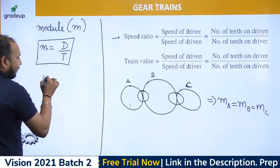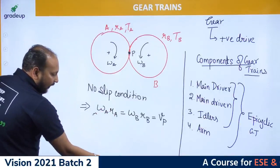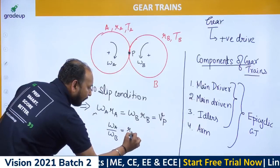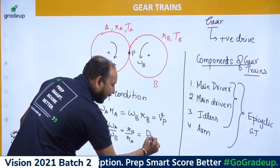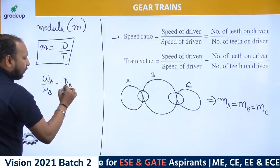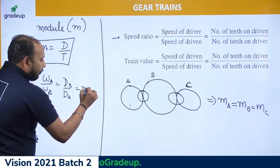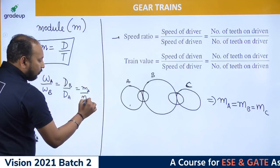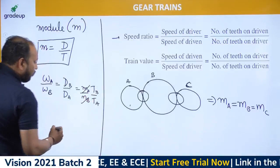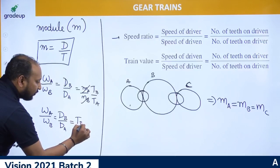From the module condition, we can derive: omega_A / omega_B = r_B / r_A = D_B / D_A. Since module m = D/T is the same for meshing gears, this simplifies to: omega_A / omega_B = T_B / T_A. So speed ratio can be expressed in terms of angular velocity, RPM, or number of teeth.